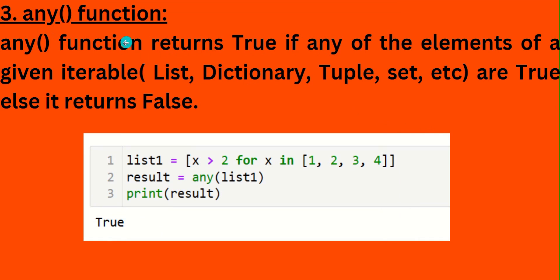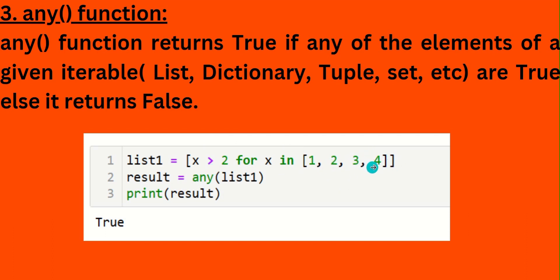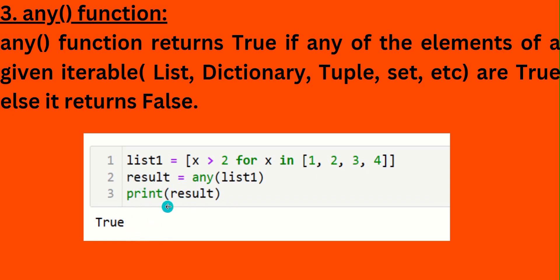Next, the 'any' function. It returns true if any element of a given iterable — list, dictionary, or tuple — is true; else it returns false. For example, checking (x > 2 for x in [1, 2, 3, 4]): 3 and 4 are greater than 2, so at least two elements are true. Therefore the output will be true.